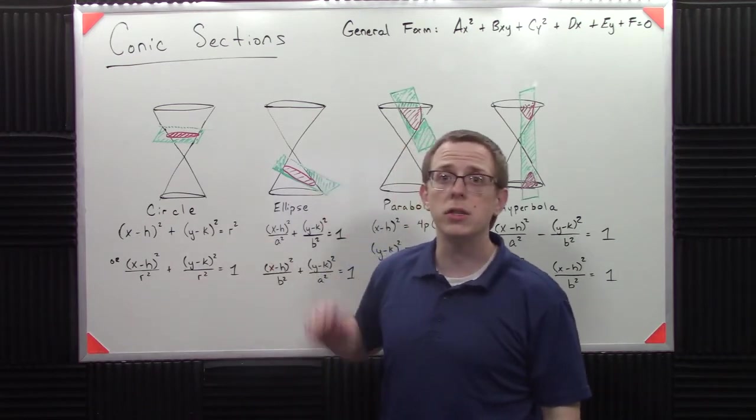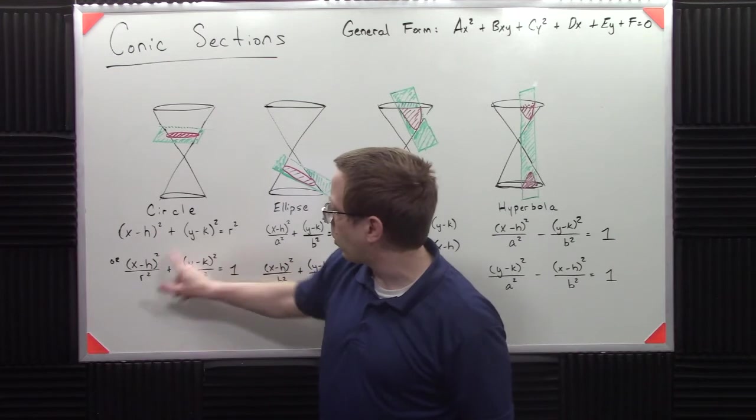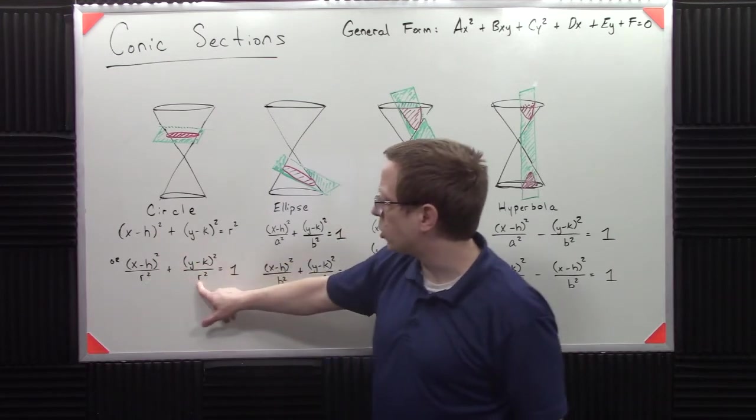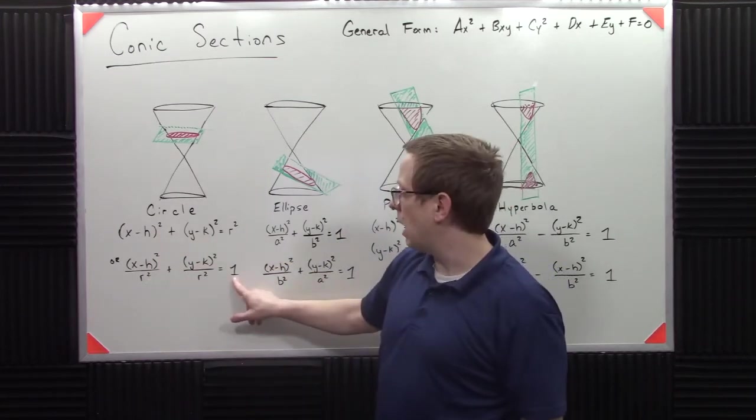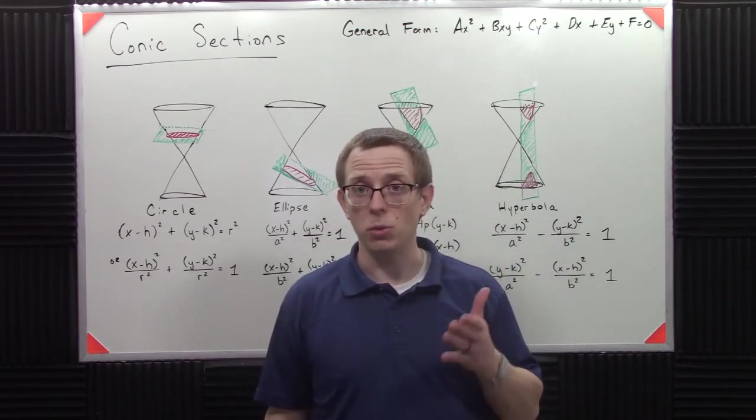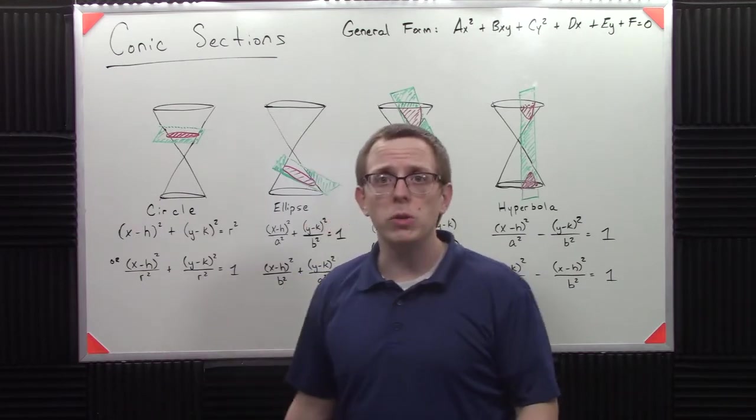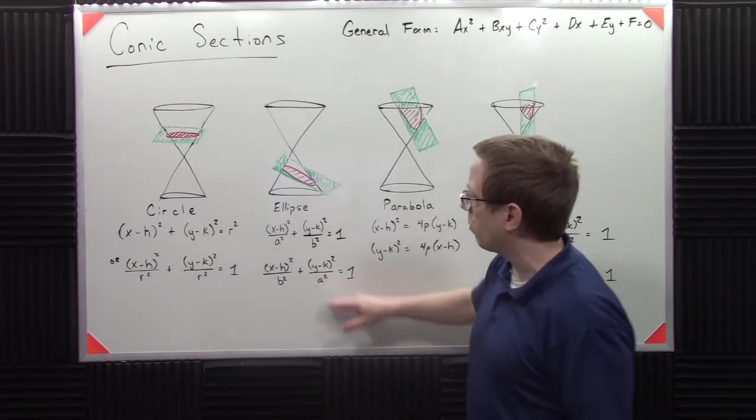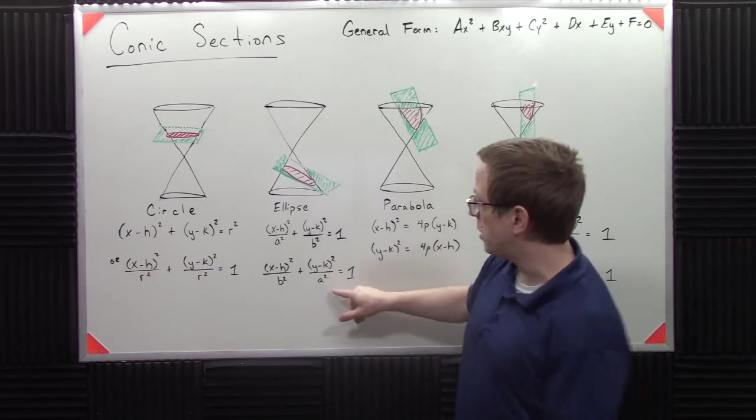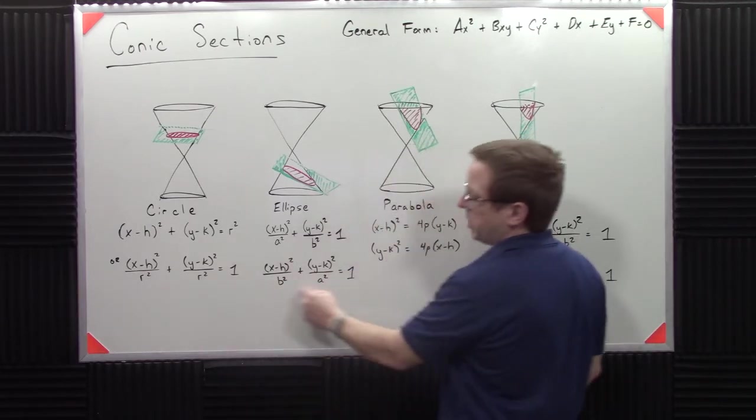Now another way you could write this, this is very uncommon, but the way that it's written is this same form, but instead you have this R squared on the bottom. And then that would be equal to one. The reason why that's a helpful way to write this, and you don't see a lot of people write this for some reason, I think this is a fantastic way. The reason why it's helpful is if you keep looking over here, you see something that looks very similar. But instead of having R squared, you have B squared and A squared.